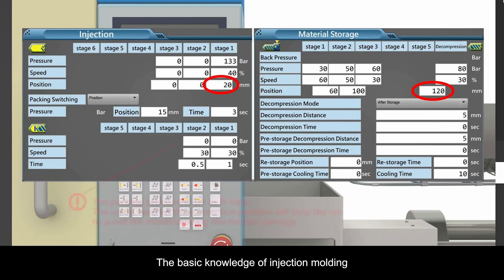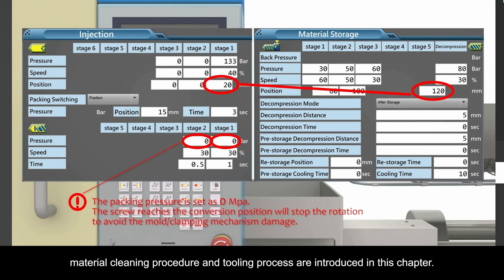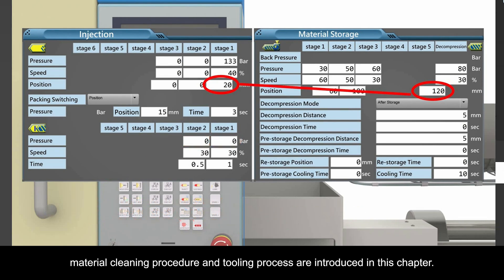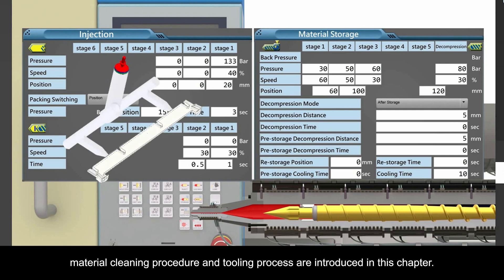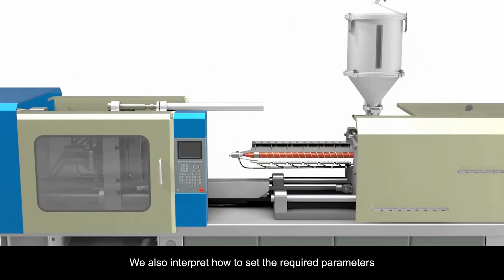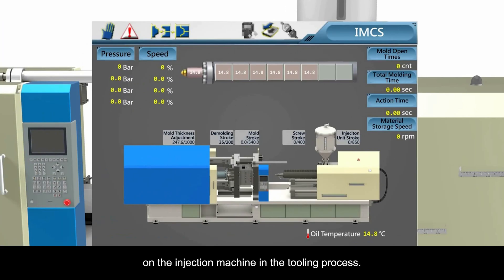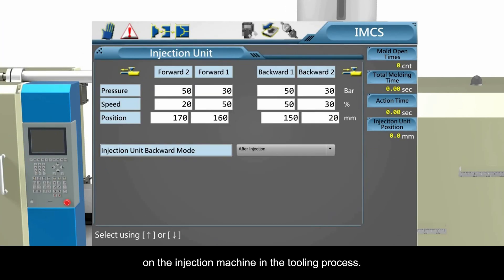For injection machine virtual operation, the basic knowledge of injection molding, mold settings of the injection machines, material cleaning procedure, and tooling process are introduced. This chapter also covers how to set the required parameters on the injection machine during the tooling process.